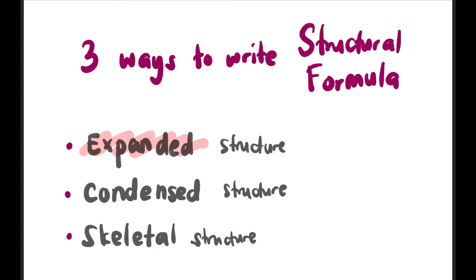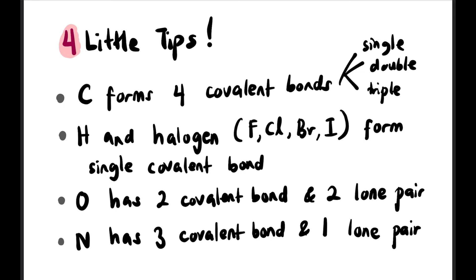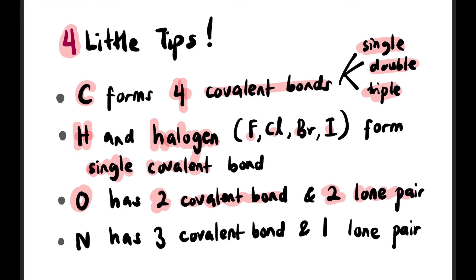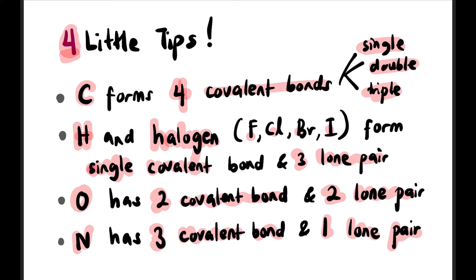There are three ways to write structural formula: expanded structure, condensed structure, and skeletal structure. Before going further, here are four little tips. First, carbon must have four covalent bonds — those bonds can be single, double, or triple. Hydrogen and halogens (F, Cl, Br, I) must form one single covalent bond. Oxygen forms two covalent bonds with two lone pairs. Nitrogen forms three bonds with one lone pair. Every element involved in organic compounds must total four electron pairs — either bonds or lone pairs. Not three, not five — exactly four.